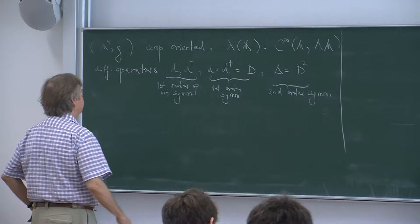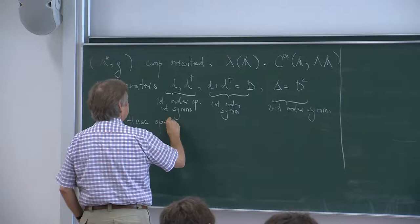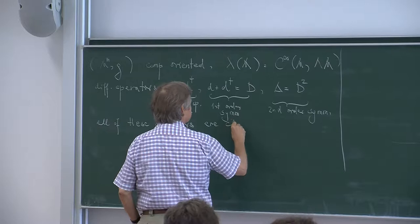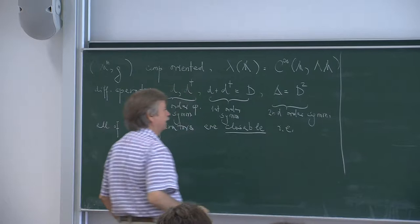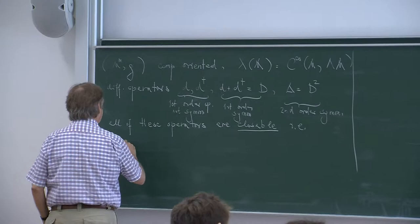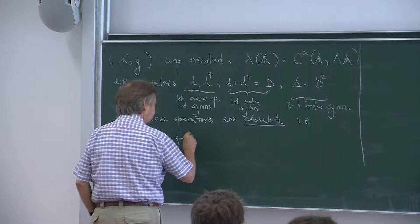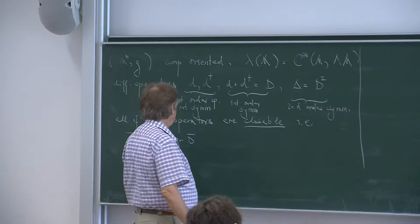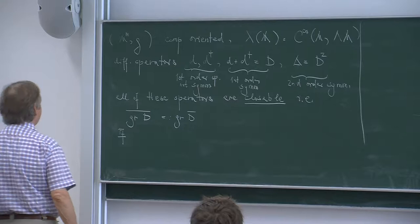All of these operators are closeable. This is what we talked about. This means that if I take the graph — let's restrict to D — and I take the closure, this is again a graph of an operator I call D-bar. And why is this so? This was one of the exercises I discussed or mentioned yesterday.